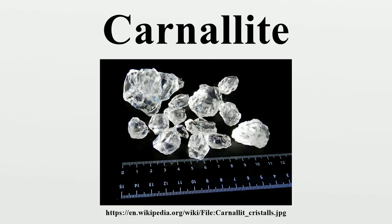Carnelite has corner and face sharing. There is a network of KCl6 octahedra, with two-thirds of them sharing faces. MgO6 octahedra occupy the open spaces within the KCl octahedra. The interatomic distance between the Mg and the H2O ranges from 0.204 to 0.209 nm, with an average of 0.2045 nm. The interatomic distance between K and Cl ranges from 0.317 to 0.331 nm, with an average of 0.324 nm. The resulting structure has a calculated density of 1.587 g per cc, in good agreement with the measured value of 1.602 g per cc.